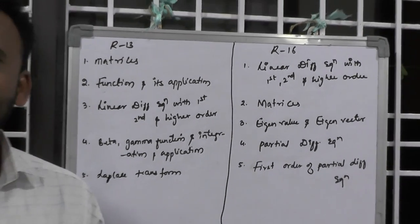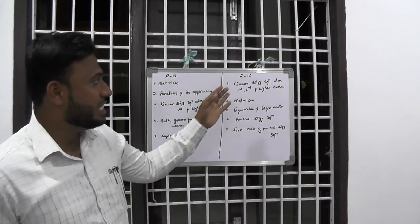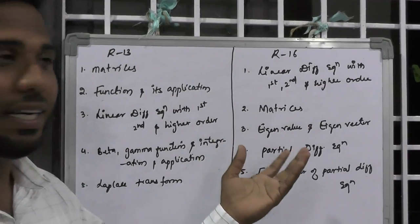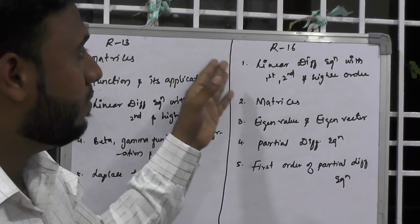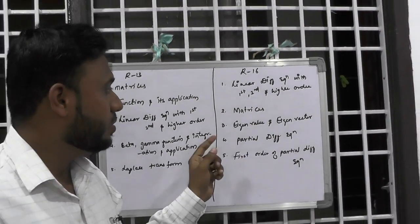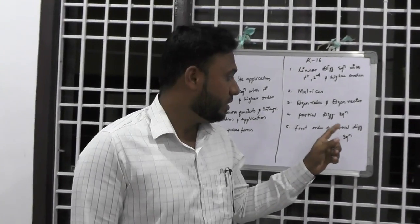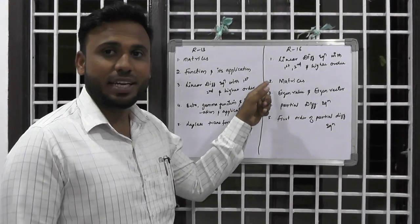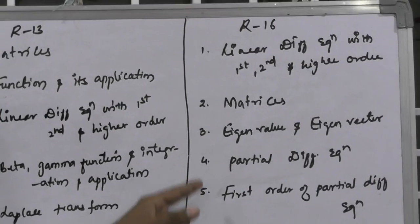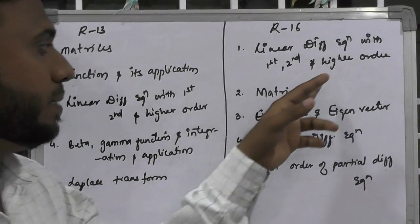R13 regulation and R15 regulation are similar — there are no changes in the units as well as no changes in the syllabus. Coming to R16 regulation, M1 syllabus again changes and a few different units are added and few units are divided. The first unit is linear differential equations with first, second, and higher order. Second unit is matrices. Third unit is eigenvector and eigenvalue. Fourth unit is partial differential equations. Fifth unit is first order partial differential equations. You can notice that matrices is divided into two parts — matrices one and matrices two — and partial differential equations are similarly split into part one and part two.